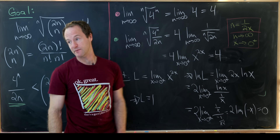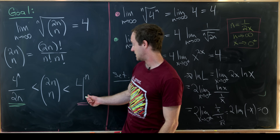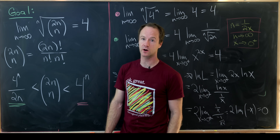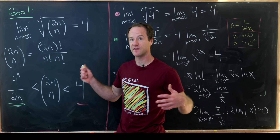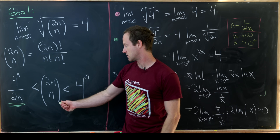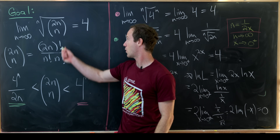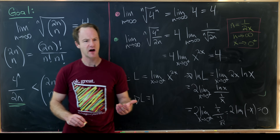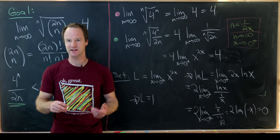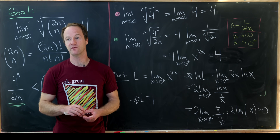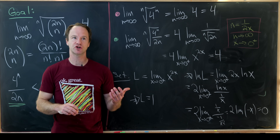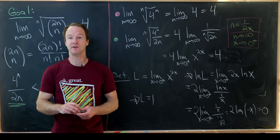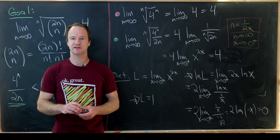So the limit of the nth roots of both the upper and lower bounds are equal to 4, which means by the squeeze theorem, the limit of the nth root of the central binomial coefficient 2n choose n must also be 4. I've done other nice limits on the channel — check out the one on screen if you'd like. And that's a good place to stop.